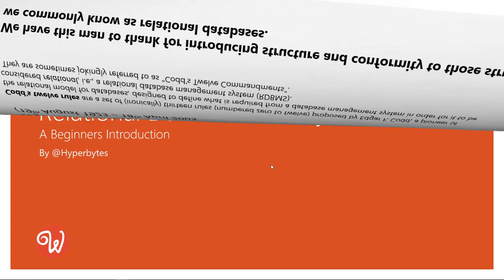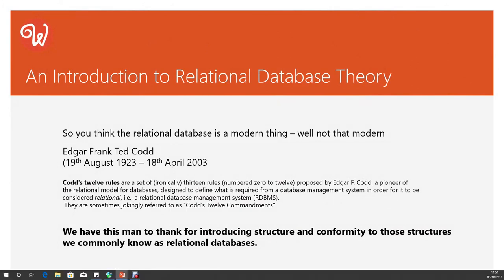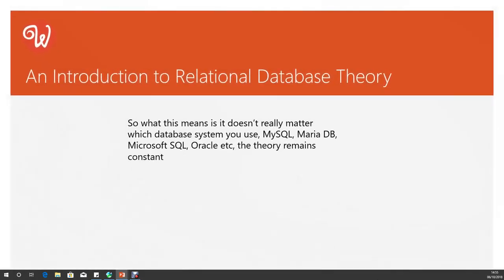Let's have a look first of all at a little history lesson. Edgar Frank Ted Codd, who died in 2003, was one of the leading lights in the development of relational database model theory in the 1980s, and through that he came up with what is referred to as Codd's 12 rules — although ironically there are 13, numbered 0 through to 12 in typical programmer fashion. He pioneered those databases and defined the requirements, giving us a structure and conformity which all relational database models tend to follow. This allows a common platform — jokingly referred to as Codd's 12 commandments. It doesn't really matter which database system we use: MySQL, MariaDB, Microsoft SQL, Oracle, or whatever — the theory remains basically constant.